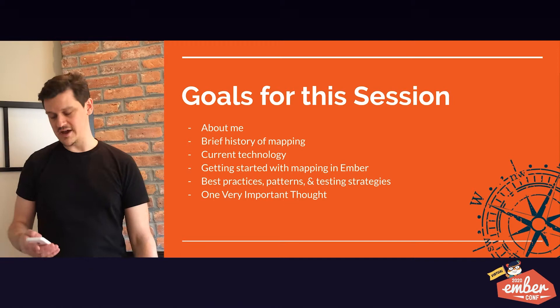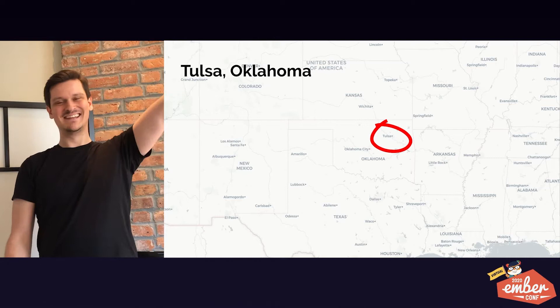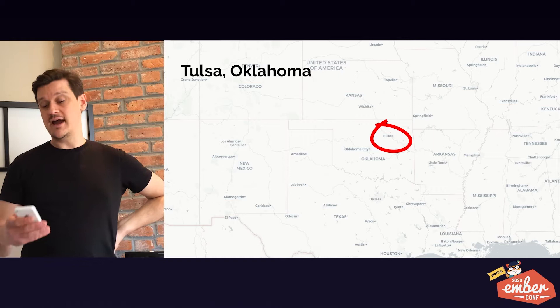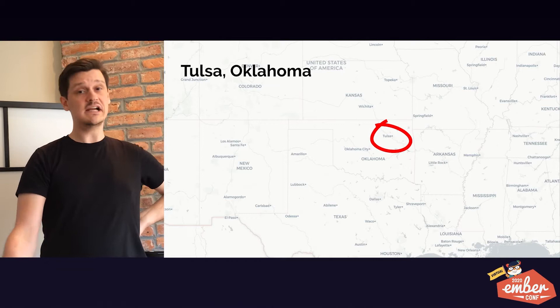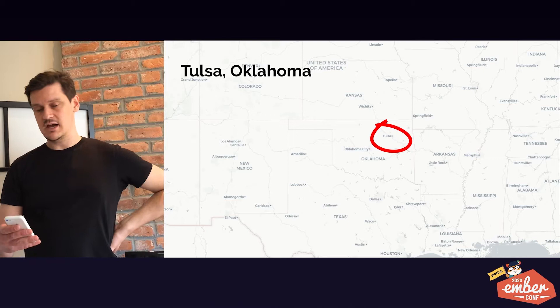A little bit about who I am. First of all, I am from Tulsa, Oklahoma. There I studied social science and political science. I did start off in computer science — I thought I wanted to be a programmer — and then, my mother was horrified when I switched to political science. But here we are, although it ends well.